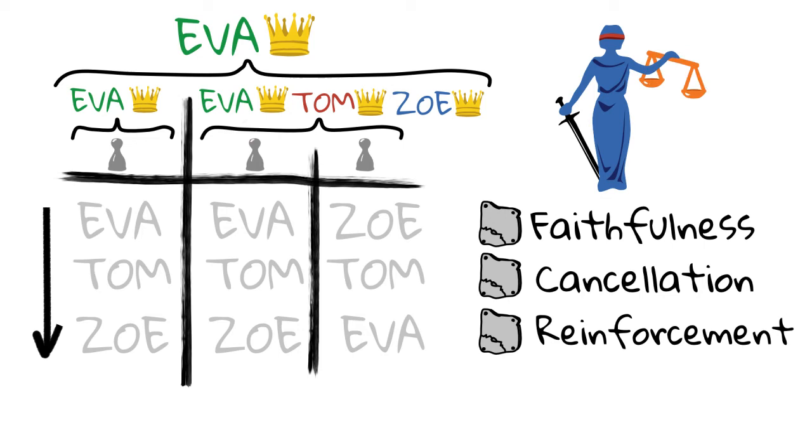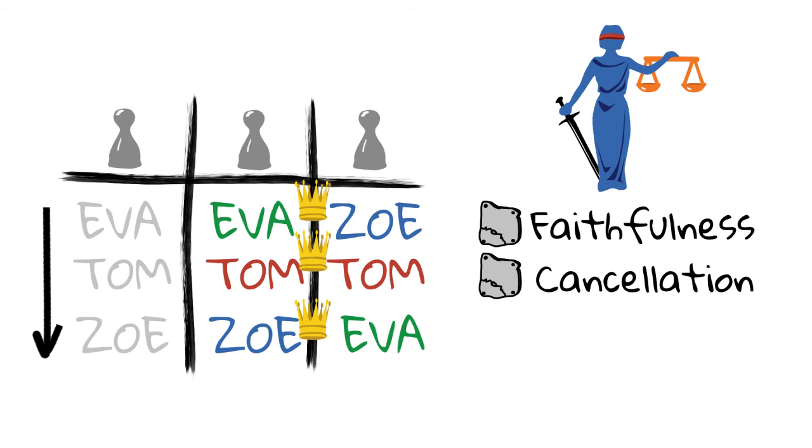Does this argumentation convince you? If not, why not? You might have a concern with step two. Here, all three candidates are winners, even though Zoe and Eva both appear on the last rank for one of the voters.